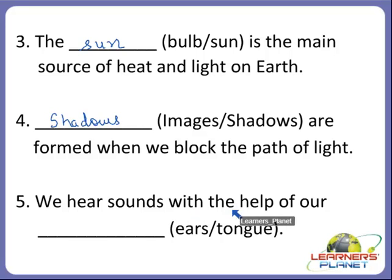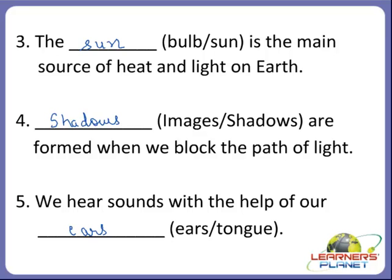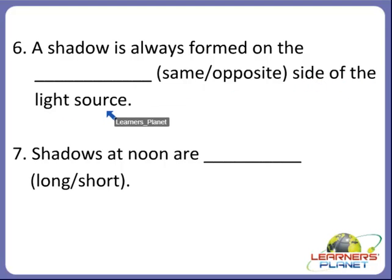We hear sounds with the help of our dash. With which organ do we hear sounds? Do we hear with our ears or with our tongue? We hear sounds with the help of our ears. A shadow is always formed on the opposite side of the light source.